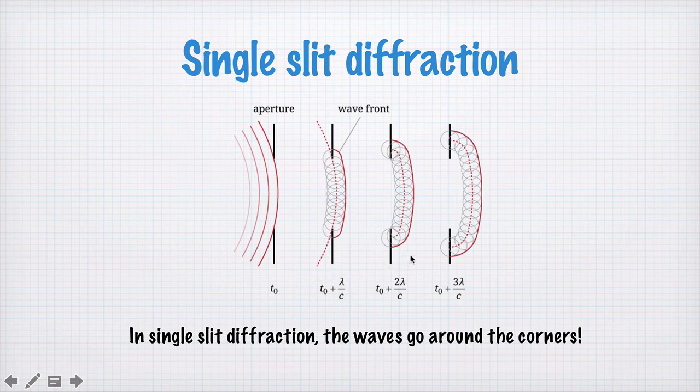And so as you propagate it forward in time, so these are steps in time, we see the wave in the middle. The interference keeps going and the wave doesn't really change shape, but at the edges it curves around the corner. And this is called single slit diffraction.